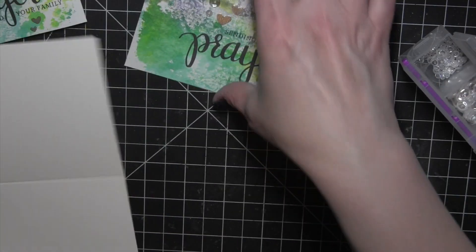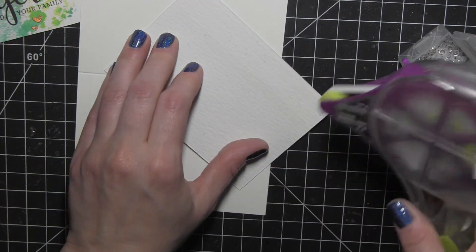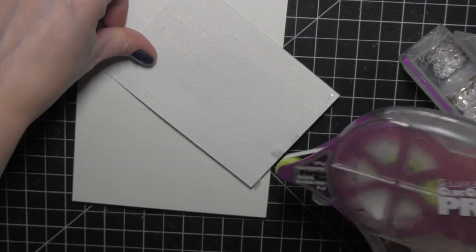After I have done that, I am going to take one of the 4 bar note cards from Simon Says Stamp and attach the panels with some nice strong adhesive to each of these cards and they are all finished. These are a nice small size card, a little bit smaller than the standard A2 size.